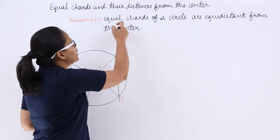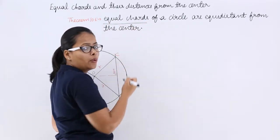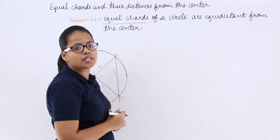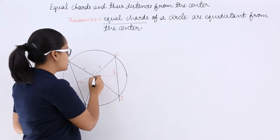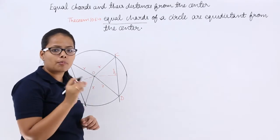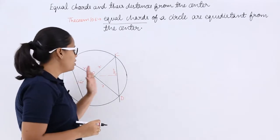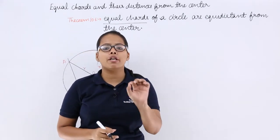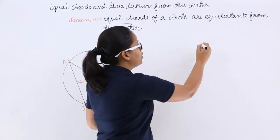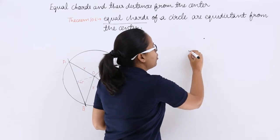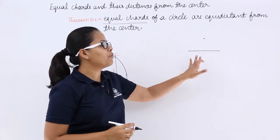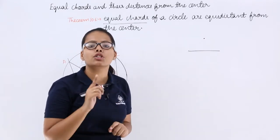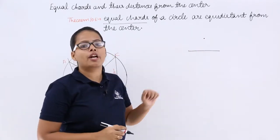What has been given to you? It has been given that these two chords are equal and you need to prove that these are equidistant. First of all, this is the center of the circle. The center is nothing but a point, and a chord is a line. How do you calculate the distance of a point from a line?